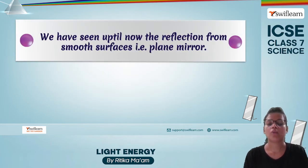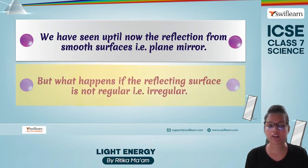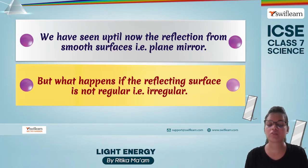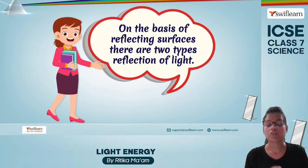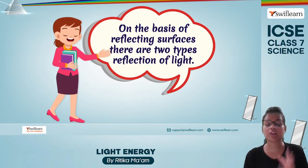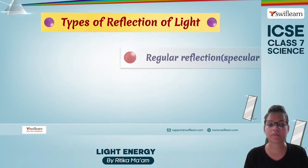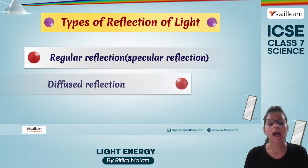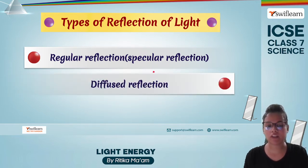We have studied reflection from smooth surfaces like a plane mirror, but it is not necessary that every surface will be smooth. We can also have irregular surfaces. On the basis of the type of reflecting surface, we have two types of reflection: regular reflection, also known as specular reflection, and diffused reflection.